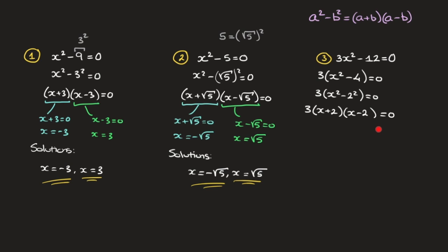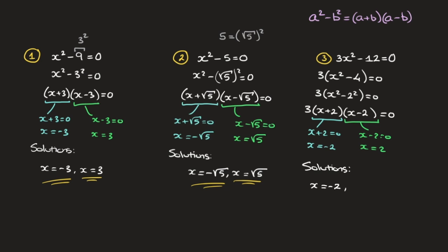On the left hand side we have three things being multiplied: the number 3, which multiplies x plus 2, which in turn multiplies x minus 2, and the product is 0. The only way that's possible is if one of those three things equals 0. Clearly 3 cannot equal 0. For x plus 2 to equal 0 we get x equals negative 2, or for x minus 2 to equal 0 we get x equals 2. Those are the two solutions: x equals negative 2 and x equals 2. That's how we use the difference of two squares to solve quadratic equations.